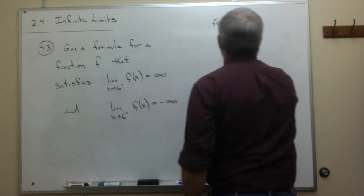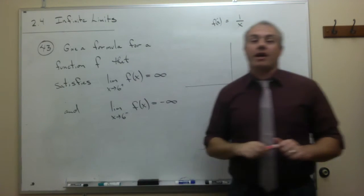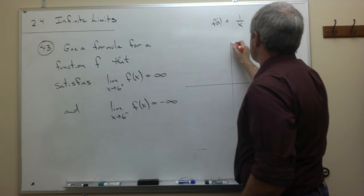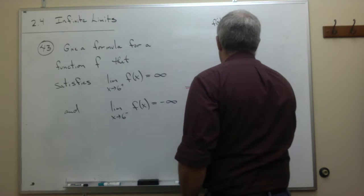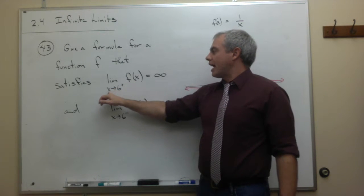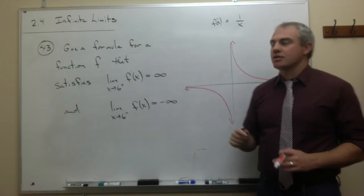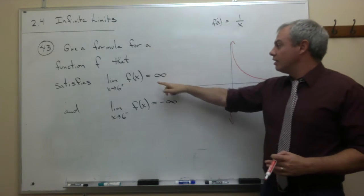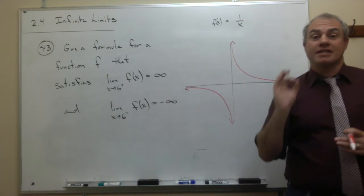Let's draw it real quick. I'm going to draw it in a different color because we're going to move it around a little bit. f of x equals 1 over x looks something like this. Now, we're dealing with something where x is headed to 6. Here, as x heads to 0, as I come at 0 from the right, I go to infinity. As I come at 0 from the left, I go to negative infinity, which is exactly what we want.